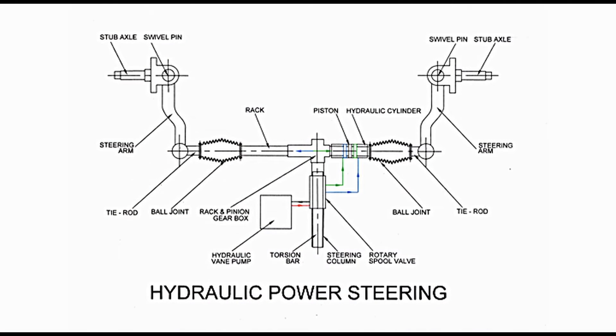Hydraulic power steering. I have taken rack and pinion steering system that has been modified as hydraulic power steering system. Hydraulic vane pump and rotary spool valve have been added as may be seen in diagram. These are represented through blocks here. Hydraulic vane pump is driven by internal combustion engine. On right side, rack is provided with hydraulic cylinder that has piston inside. A torsion bar is provided that is located inside steering column, as may be seen on lower side of diagram.